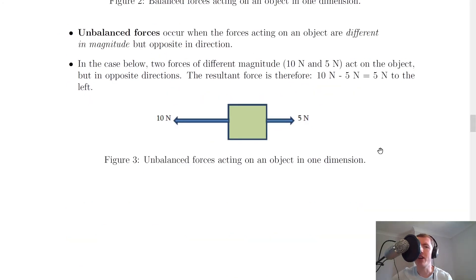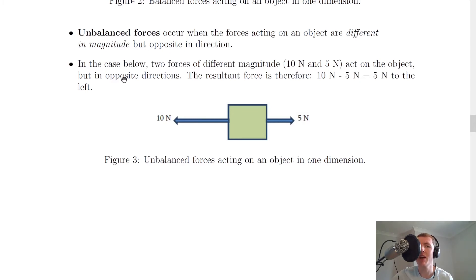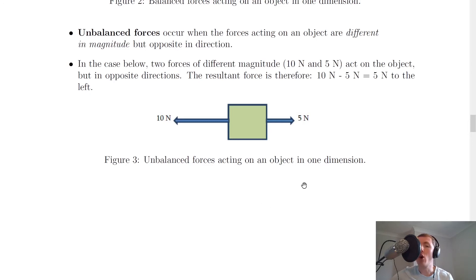Unbalanced forces on the other hand occur when the forces acting on an object are different in magnitude but opposite in direction. Here's another example: two forces of different magnitudes — 10 newtons to the left and 5 newtons to the right — act on the object but in opposite directions. The resultant force is therefore 10 to the left minus 5 to the right, which gives us 5 newtons to the left. Remember, another phrase for resultant force is the unbalanced force, so this gives an unbalanced force of 5 newtons to the left, meaning the object would start accelerating to the left.